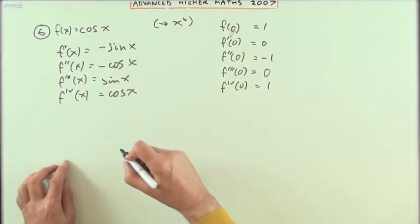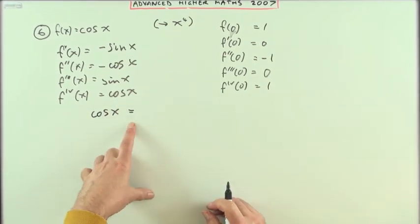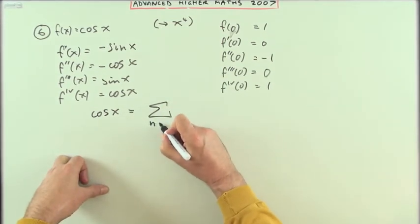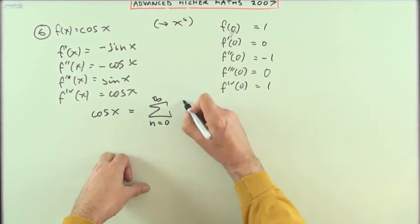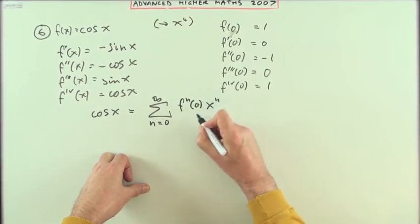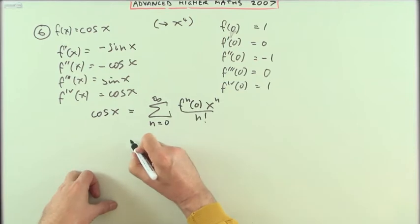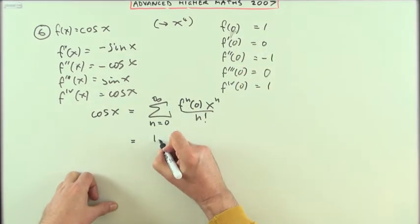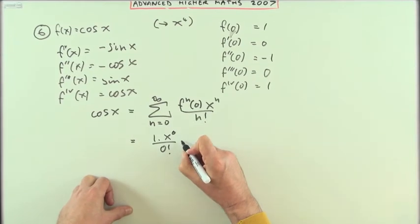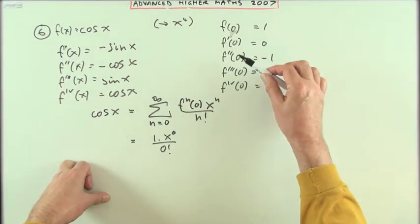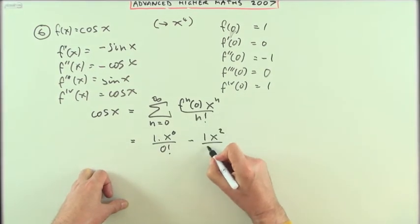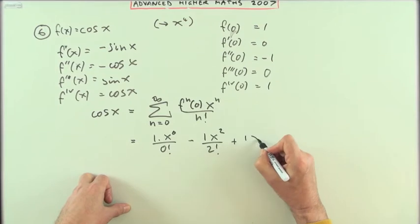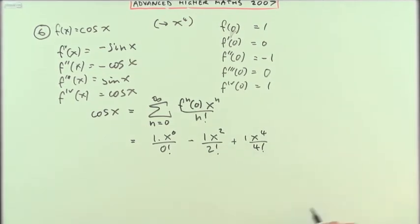So cos x will be the power series made up from these coefficients. I could set that out as the summation for that power series: the sum from n equals 0 to infinity of the nth derivative at 0 times x to the n over n factorial. For the first one when n was 0, I've got 1 times x to the 0 over 0 factorial. When n is 2, I've got negative 1 times x squared over 2 factorial. When n is 4, I've got 1 times x to the 4 over 4 factorial. And those are the only ones I wanted.